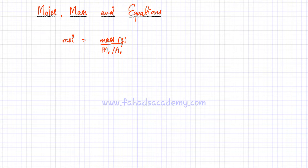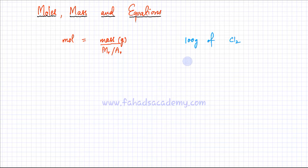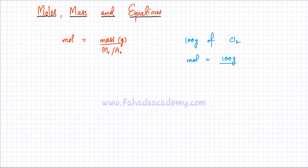Let's revise this formula — moles is equal to mass over Mr or Ar. For example, if I have 100 grams of Cl₂ molecules and I want to figure out how many moles that is, I would use moles equals mass over Mr. The mass is given as 100 grams, and I can look for the Mr in the periodic table.